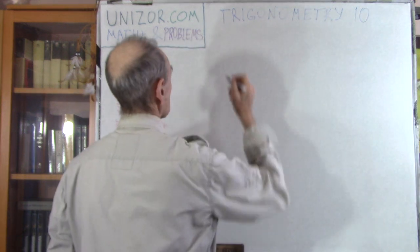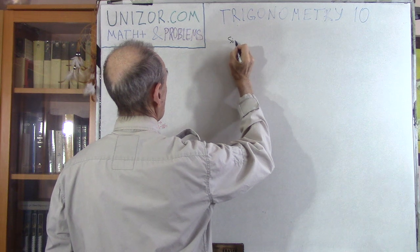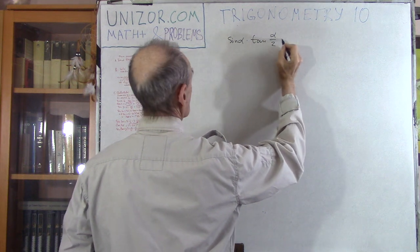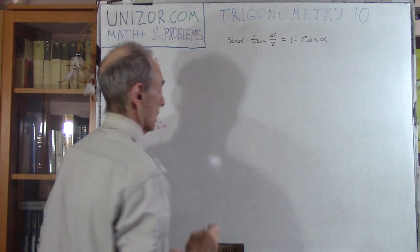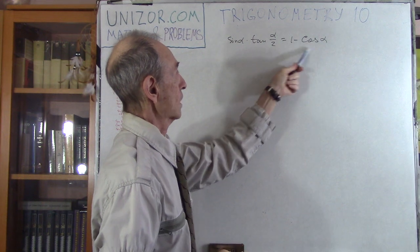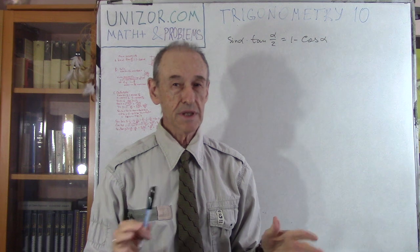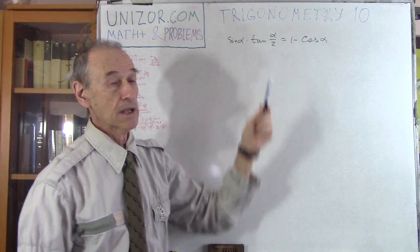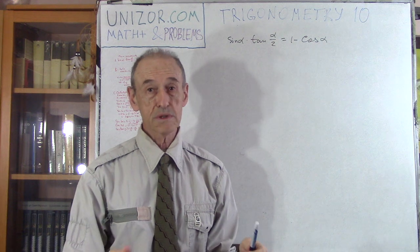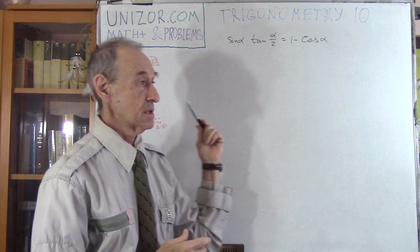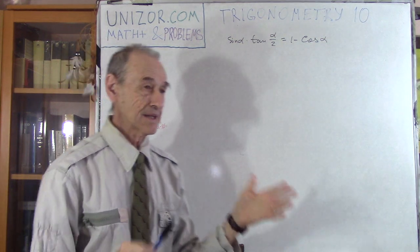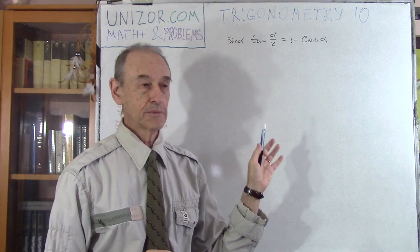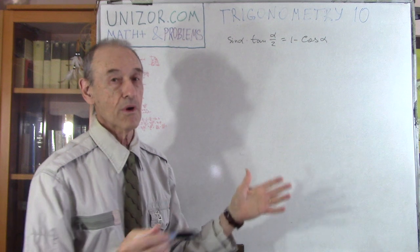The first problem is as follows. I have to prove the following identity: sine times tangent of half an angle equals 1 minus cosine. It's probably relatively easy to do it algebraically by converting sine and cosine into a tangent of half an angle — there are formulas we derived in the trigonometry course in Math for Teens. But I would like to prove this geometrically, at least for acute angles.